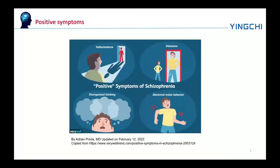Positive symptoms are those symptoms that are not normally experienced but are present in people during a psychotic episode in schizophrenia. They include delusions, hallucinations, and disorganized thoughts and speech, typically regarded as manifestations of psychosis. Hallucinations most commonly involve the sense of hearing — hearing voices — but can sometimes involve any of the other senses of taste, sight, smell, and touch.